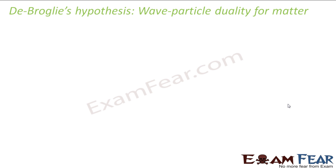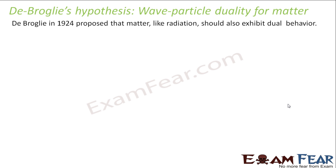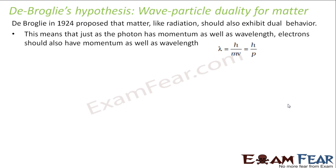The next limitation was de Broglie's hypothesis, which talked about the wave-particle duality of matter. De Broglie in 1924 proposed that matter, like radiation, should also exhibit dual behavior. He told that any object we see can behave like a wave and also like a particle — every object on this earth has wave nature as well as particle nature. He told that the wavelength associated with any object of mass m moving with a velocity v is given by lambda equals h by mv.